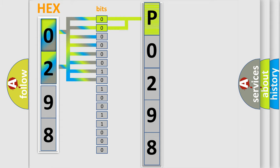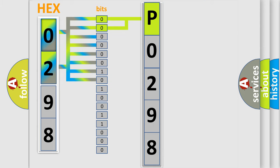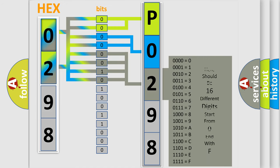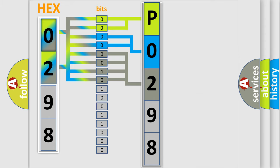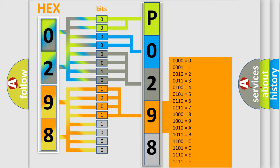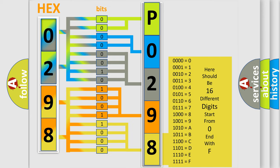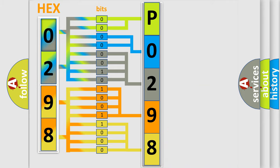By combining the first two bits, the basic character of the error code is expressed. The next two bits determine the second character. The last four bits of the first byte define the third character of the code. The second byte is composed of a combination of eight bits. The first four bits determine the fourth character, and the combination of the last four bits defines the fifth character. A single byte conceals 256 possible combinations. We now know in what way the diagnostic tool translates the received information into a more comprehensible format.